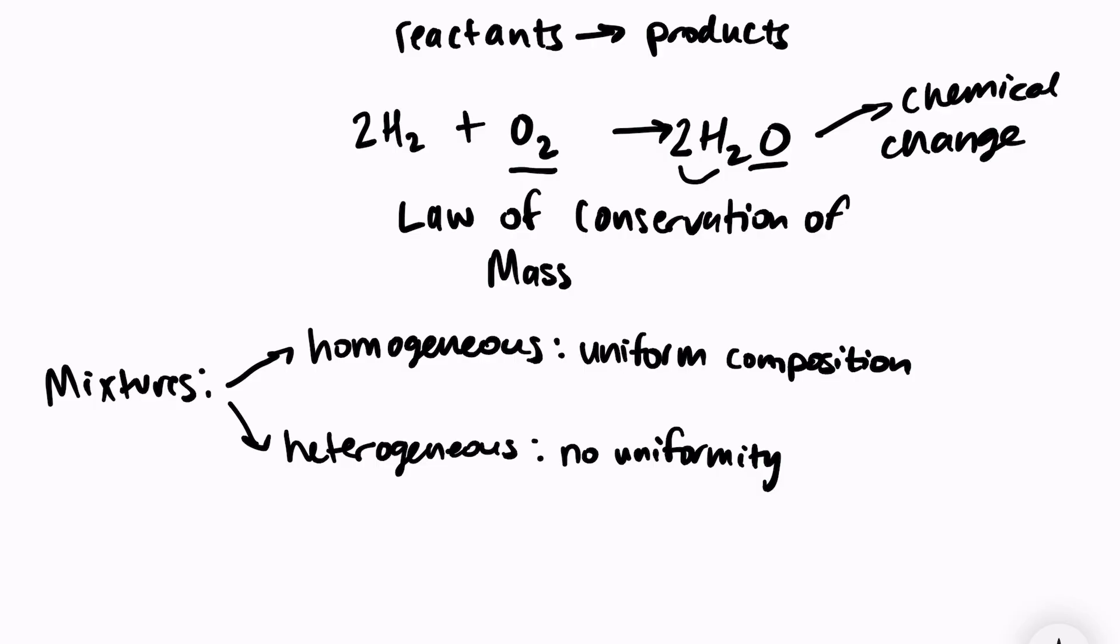which means if you cut it into pieces, every piece would be different. For a homogeneous mixture, an example would be milk. You cannot tell the separate layers apart. A heterogeneous mixture would be something like cookie dough. If you drink a glass of milk, every drink tastes the same—uniform composition. If you eat cookie dough, every bite could have a different number of chocolate chips. There's no uniformity throughout.